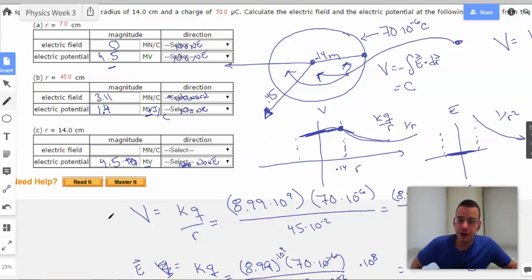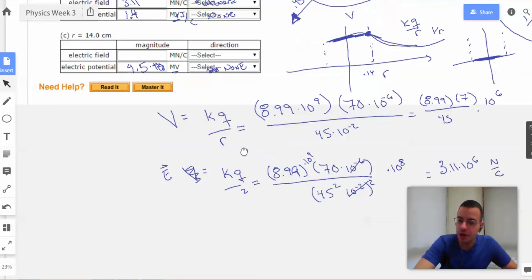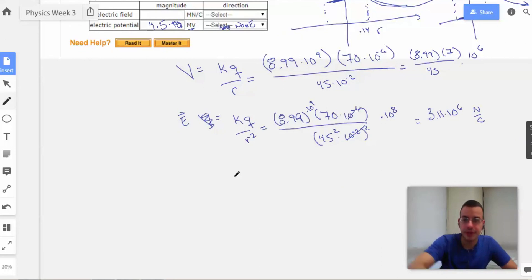Alright. So now for the electric field. I'm not quite sure where they're going with this. I'm going to say that the electric field equals kq over r squared, which is going to be 8.99 times 7 times 10 to the 8th over 14 squared.